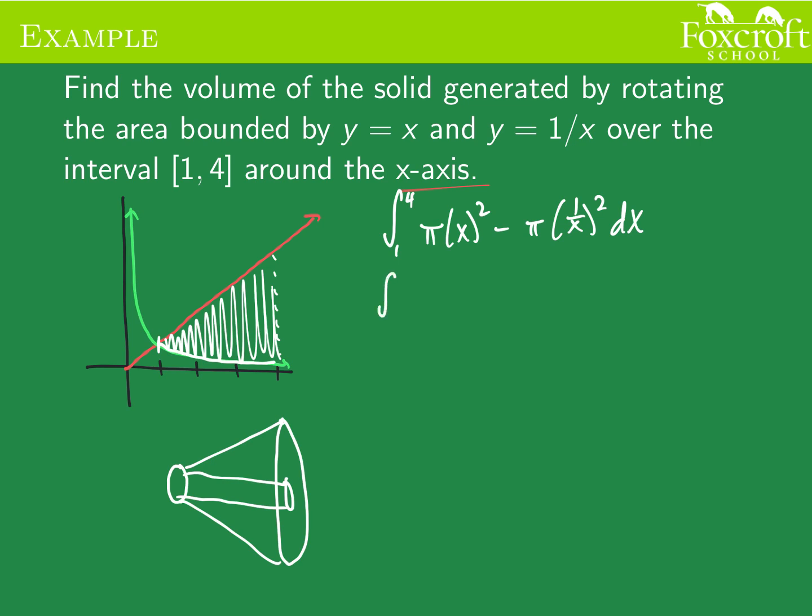So a little bit of simplifying. Now I should be able to take the antiderivative, add 1 to the power divided by the new power. This x to the negative 2 is going to be x to the negative 1 divided by negative 1, and evaluate it from 1 to 4.